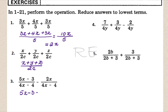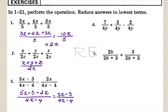5x minus 3 over 4x minus 4, minus 2x over 4x minus 4. The common denominator is 4x minus 4, and 5 minus 2 is 3, so we get 3x minus 3 over 4x minus 4. Now, 3 is the greatest common factor of the numerator: 3 times x minus 1. And 4 is the greatest common factor of the denominator: 4 times x minus 1. x minus 1 cancels, so the answer is 3 fourths.